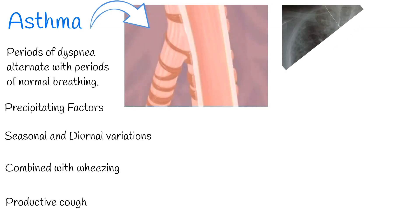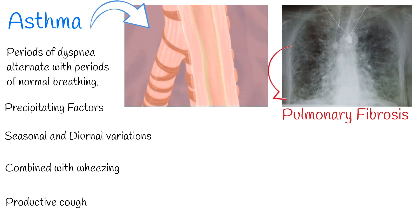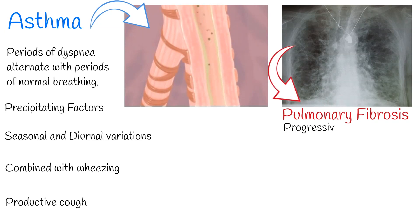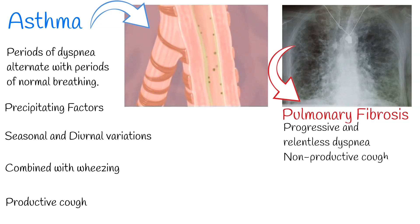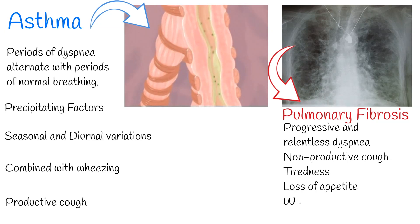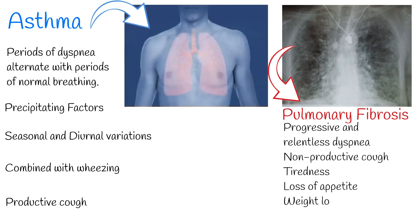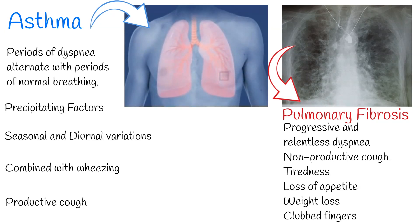Third, pulmonary fibrosis. Patients with pulmonary fibrosis generally present with progressive and relentless dyspnea with a variable time course. Frequently the only associated symptom is a non-productive cough. Pulmonary fibrosis can also be associated with tiredness, loss of appetite, weight loss, and rounded and swollen fingertips — clubbed fingers.